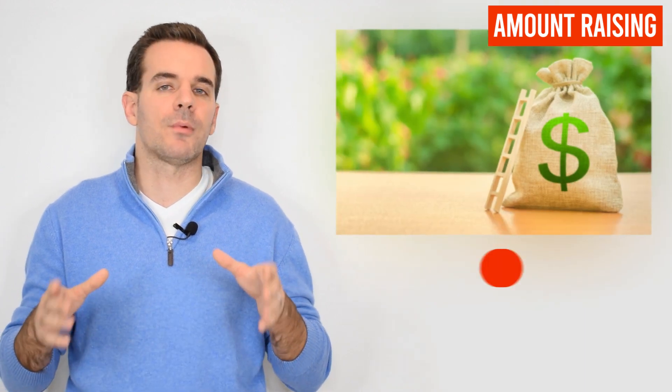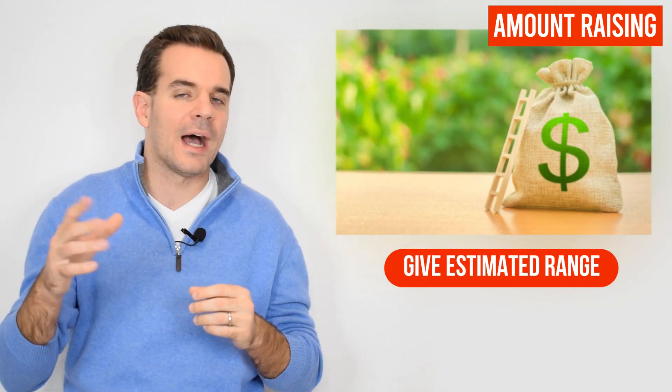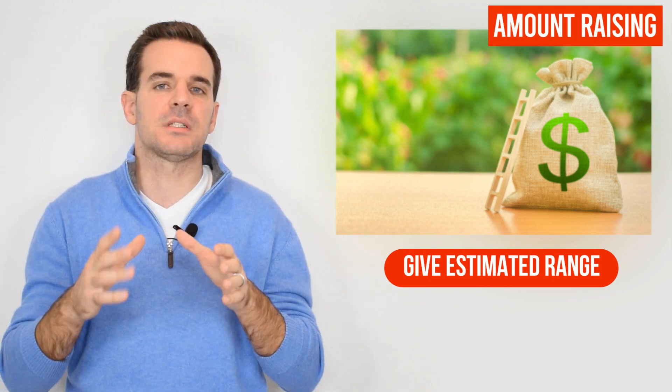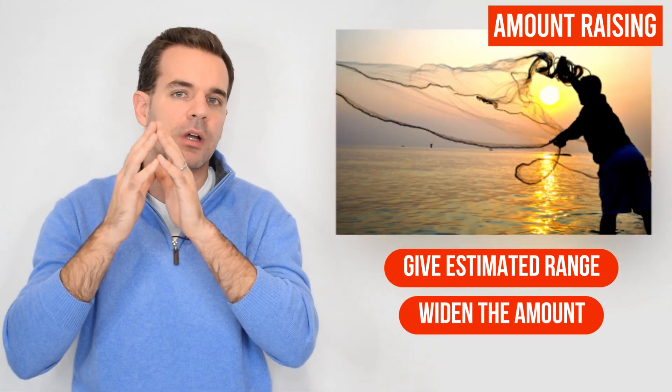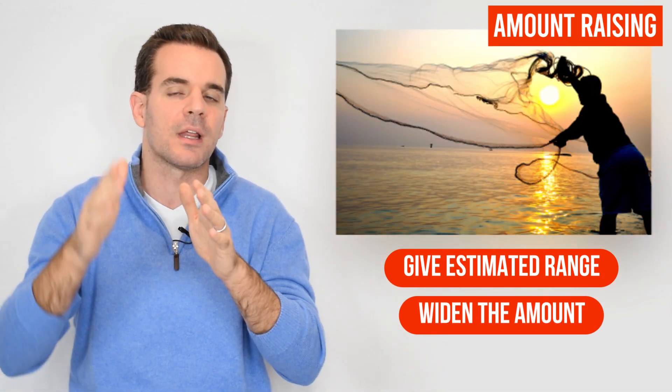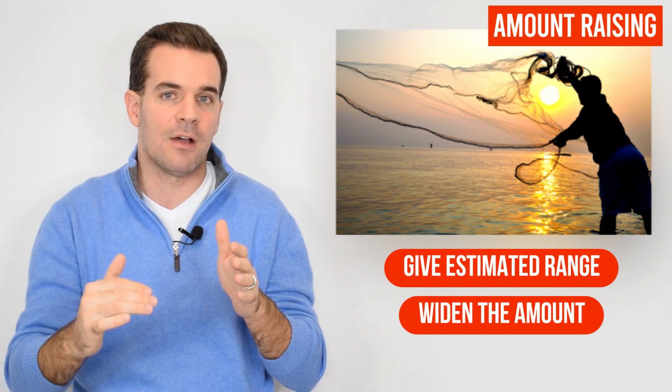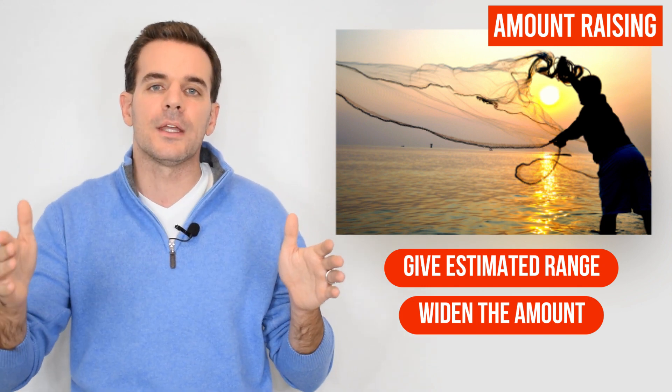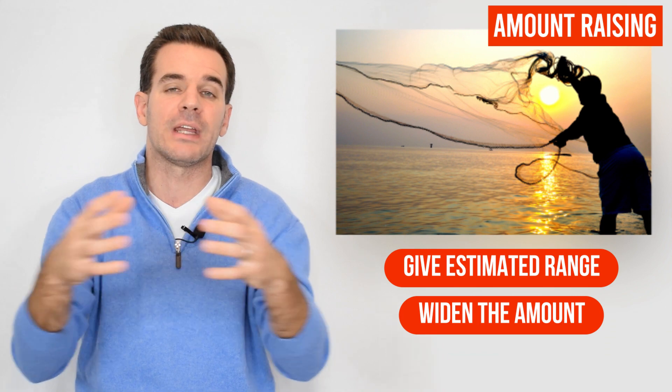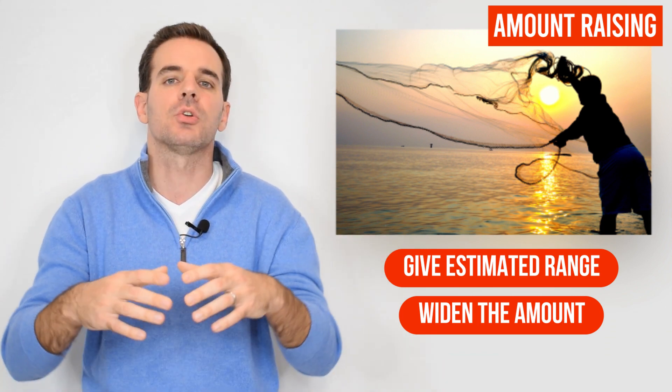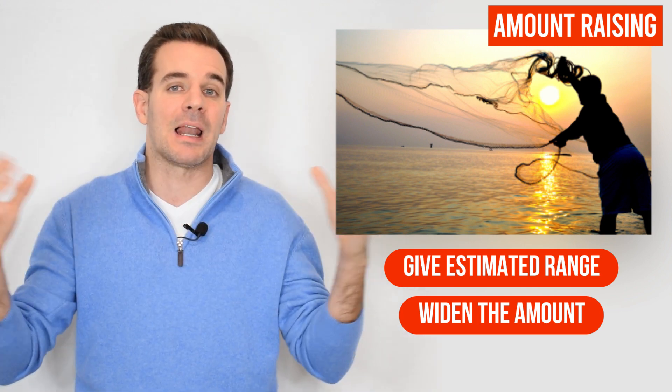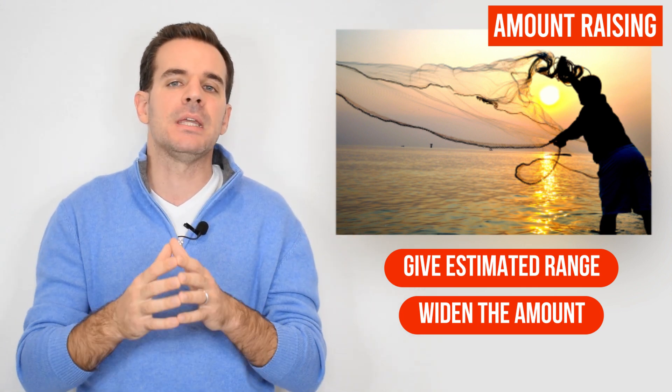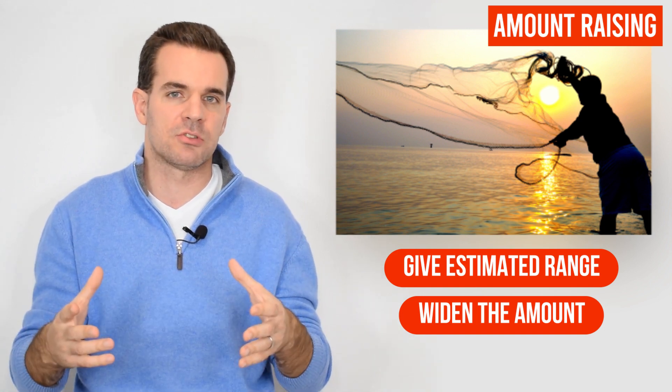Then, you want to talk about the amount that you're raising. Here, you can talk about a range. Maybe you can throw about from X to Y rather than just throwing the specific amount because this way, you're making the net a little bit wider rather than just going by to, let's say, if you're raising $2 million to the people that are investing $2 million and down. Here, if you were to say between $2 million to $4 million, you're capturing every single one in between, so you're making a little bit broad. This is a good way to cast a wider net and be able to get more people and more meetings and more conversations going.